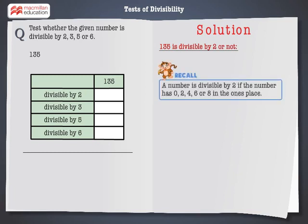Let's recall that a number is divisible by 2 if the number has 0, 2, 4, 6, or 8 in the 1's place. 135 has 5 in the 1's place. Hence, as per the given rule, 135 is not divisible by 2.